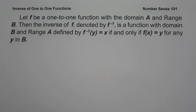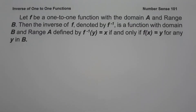Always remember, a function has an inverse if and only if it is one-to-one. A function is one-to-one if the highest exponent is an odd number. But if the highest exponent is an even number or an absolute value, this is not a one-to-one function. These are the basic concepts you need to remember in order to find the inverse of a one-to-one function.